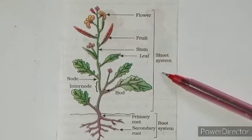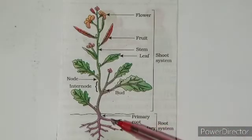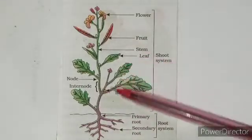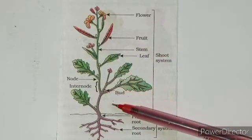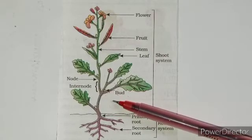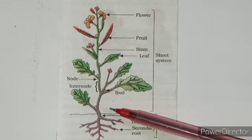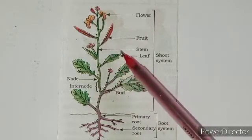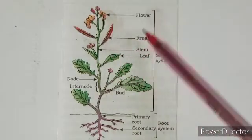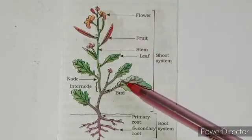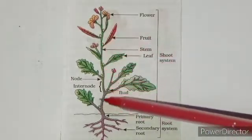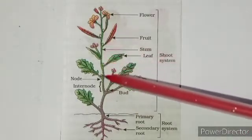The next important part is the shoot part of a plant — the part of the plant that grows above the soil. Root grows below the soil; above the soil the shoot grows. The shoot includes the stem, branches, leaves, flowers, and fruits.